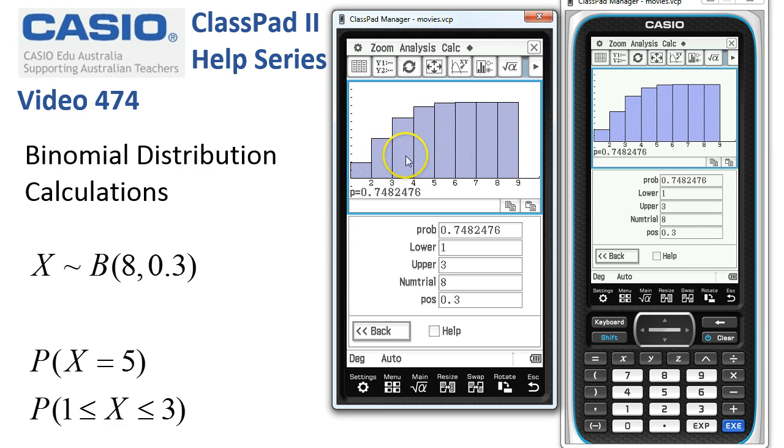So we're summing up the first three here: 1, 2, and 3 to get 0.74, and we're done.